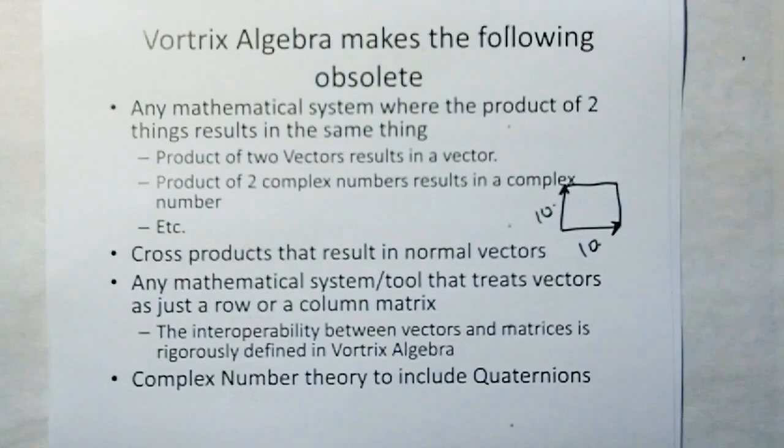Vortrix algebra also makes any mathematical system or tool that treats vectors as just a row or column matrix obsolete. In Vortrix algebra, the interoperability between vectors and matrices is rigorously defined. Vortrix matrices and vectors do not occupy the same space. Therefore, you cannot casually consider a vector as a row or column matrix. That's completely a violation of both form and units.